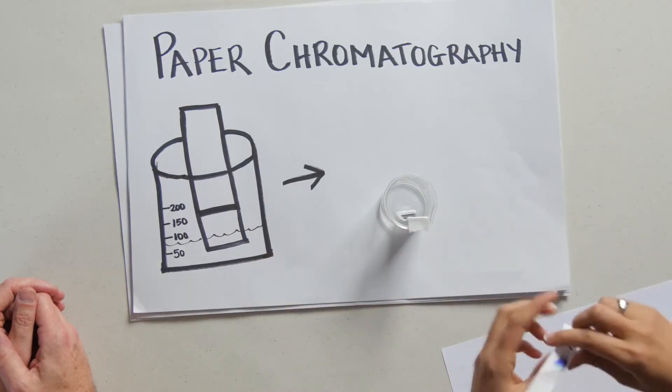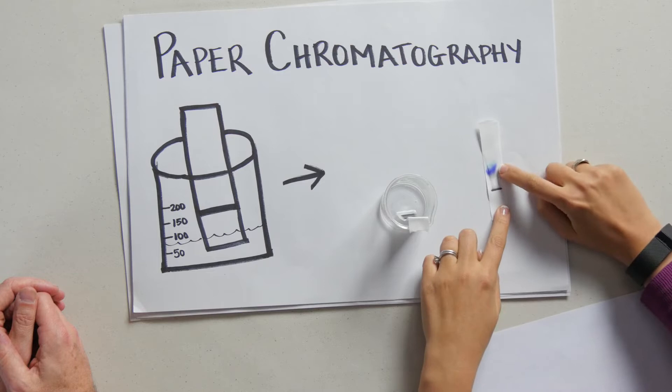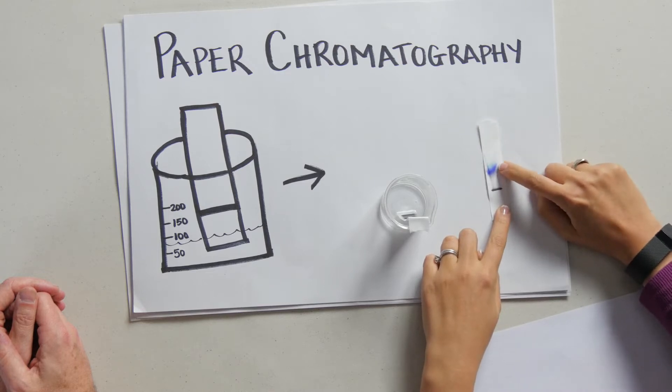And then after a little while, take some time, you end up with something like this. So you can see here we have our black line, our ink that started off, that separated into two bands - the purple and the blue.